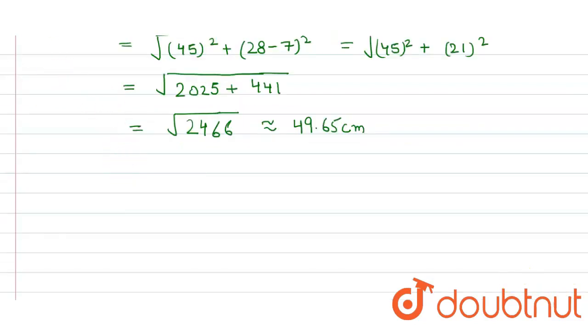So here the curved surface area is equal to π(r₁ + r₂) × l, which is slant height.